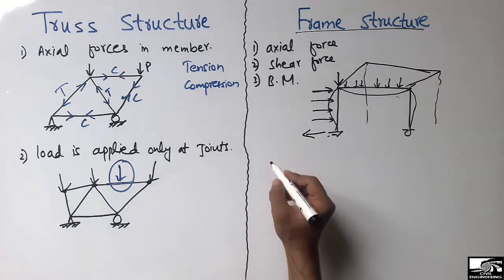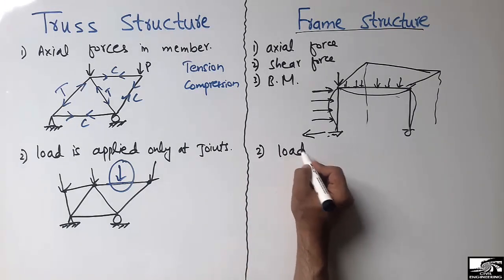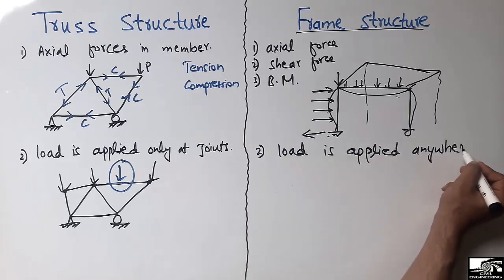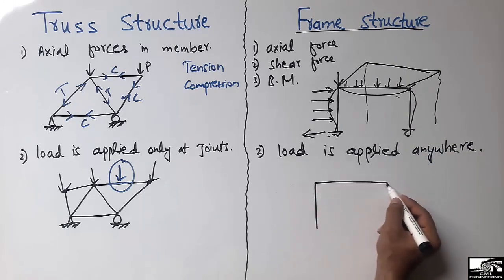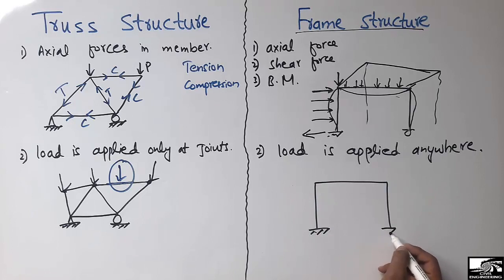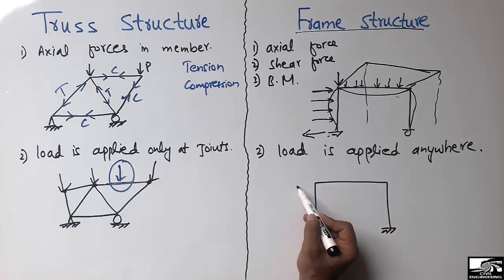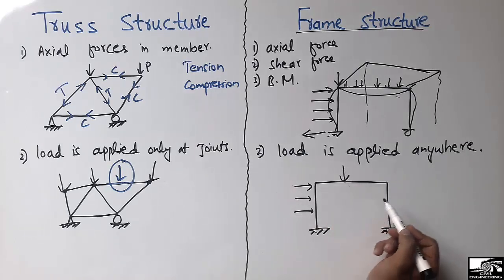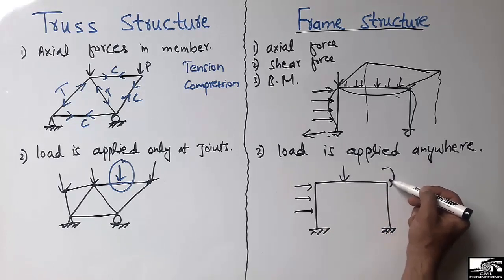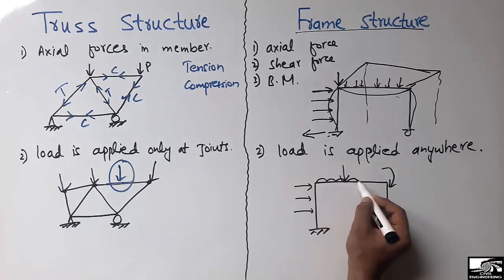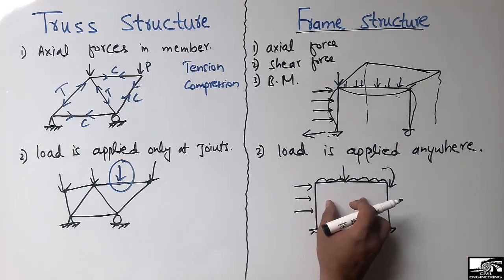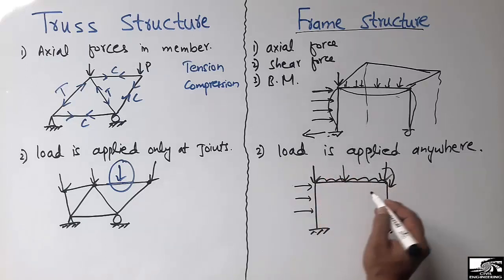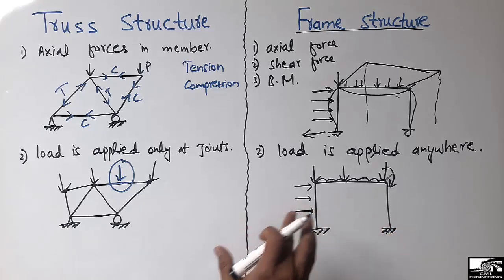In the frame structure, you can apply the load anywhere on your frame. You can apply a point load on the beam, a moment at the joint, or a uniformly distributed load on the beam. You can also apply the load at the joint as well. There is no limitation in the frame structure — you can apply the load anywhere and analyze it.